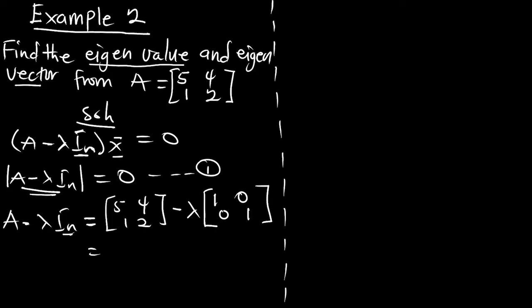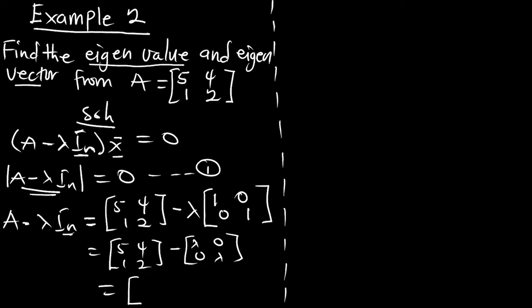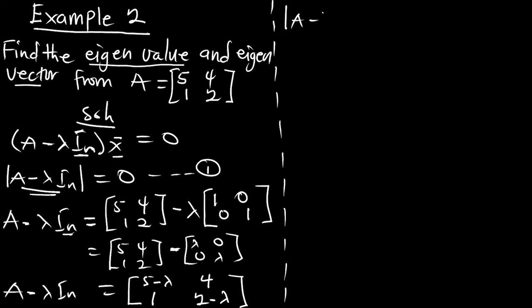This is further going to be [[5,4],[1,2]] minus, when you multiply, lambda times the identity gives [[lambda,0],[0,lambda]]. This is subtraction of matrices, so this is going to be: 5 minus lambda, 4 minus 0 which is 4, 1 minus 0 which is 1, and 2 minus lambda. So this represents A minus lambda I_n.